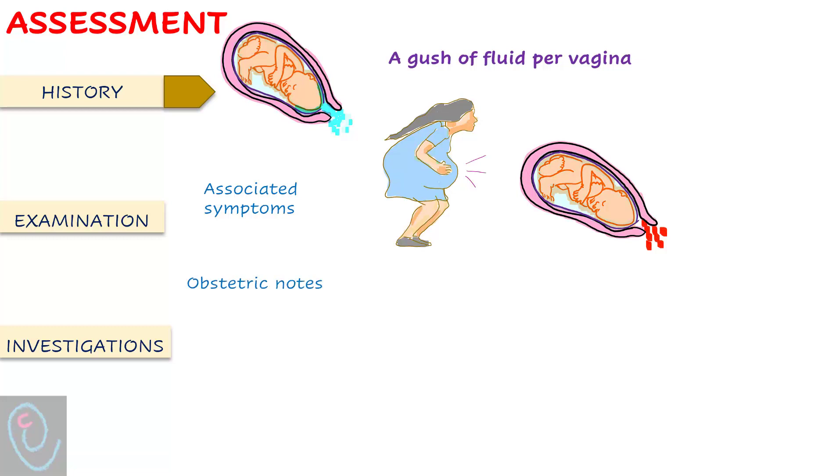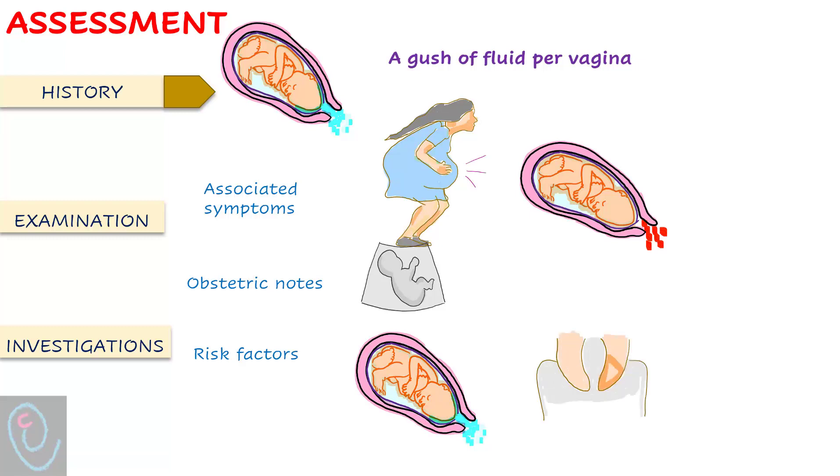Review obstetric notes to identify gestational age. The best method is early pregnancy ultrasound, but also identify obstetric complications such as pre-eclampsia and diabetes. Ask about risk factors such as history of prior pre-term PROM or cervical surgery.